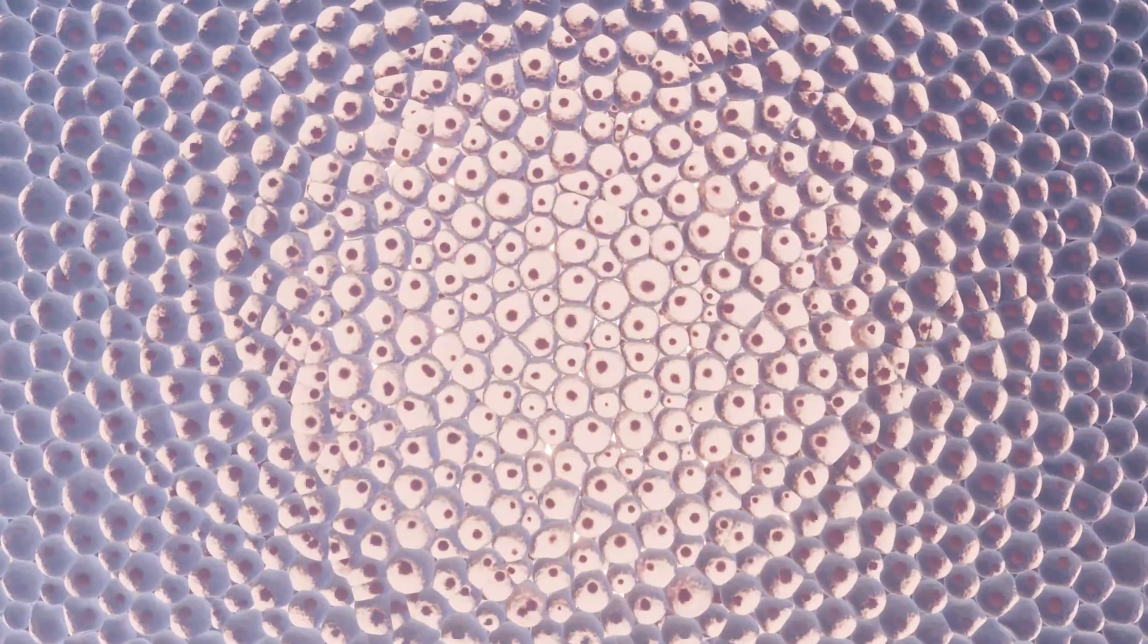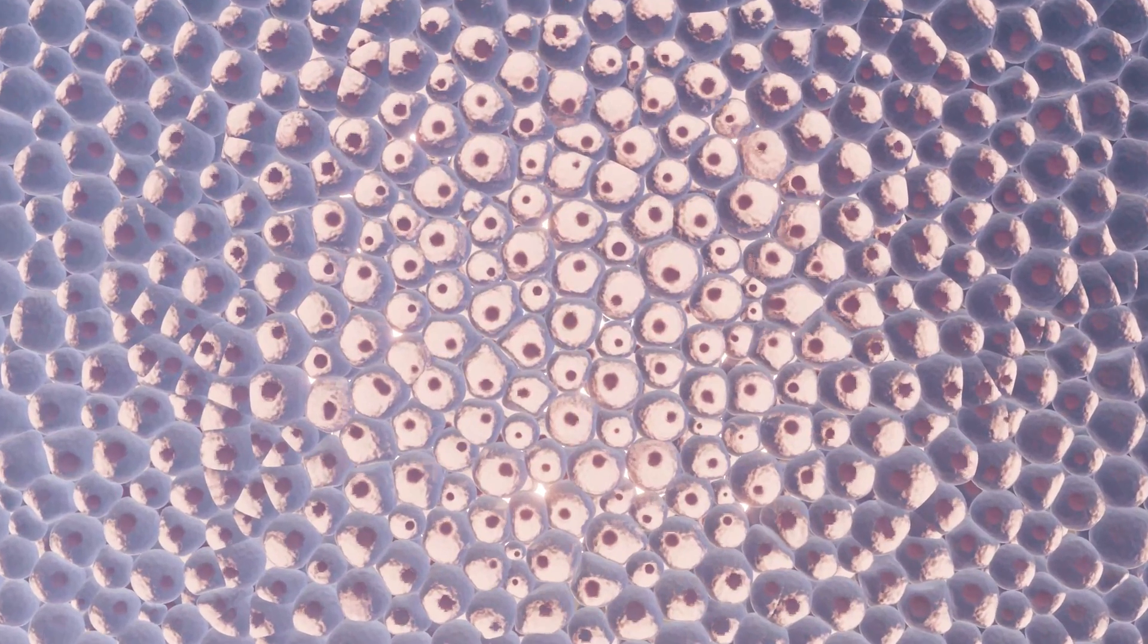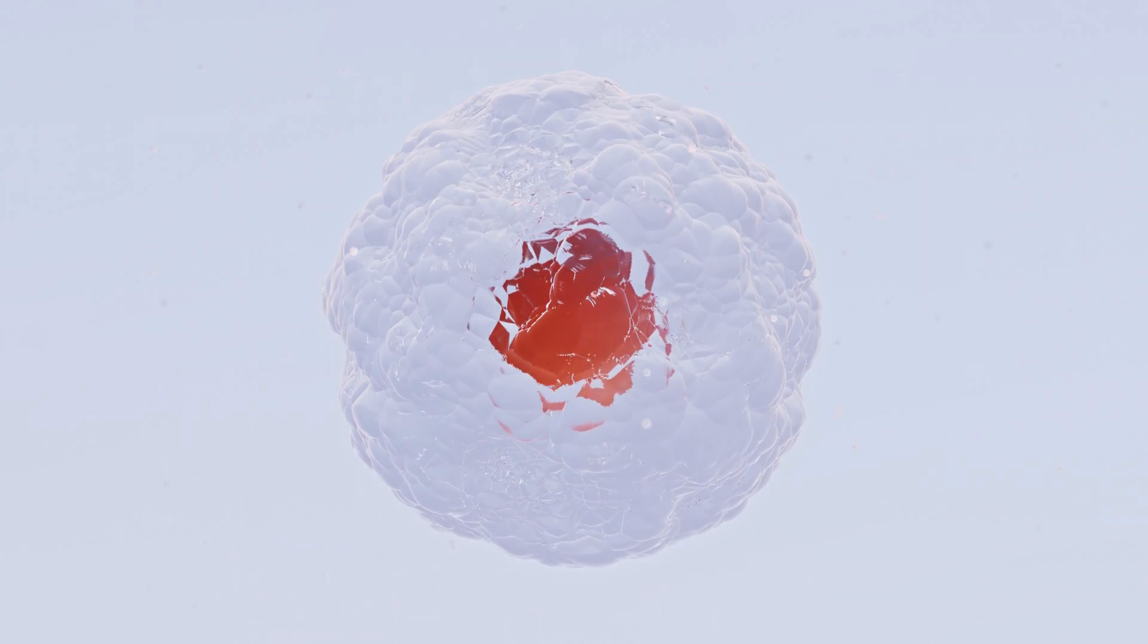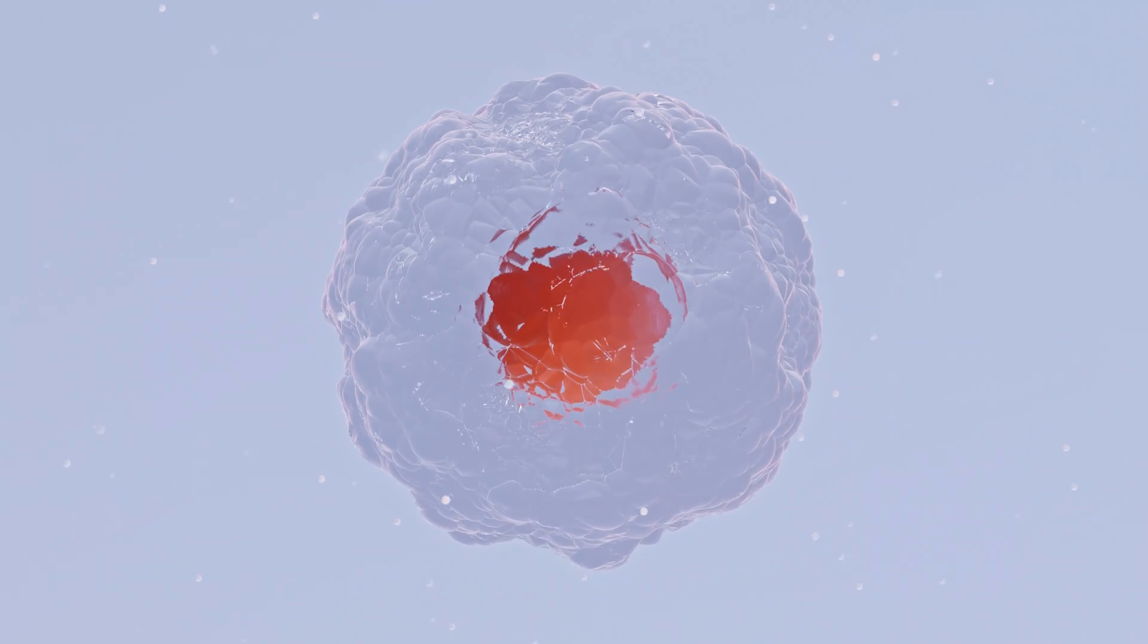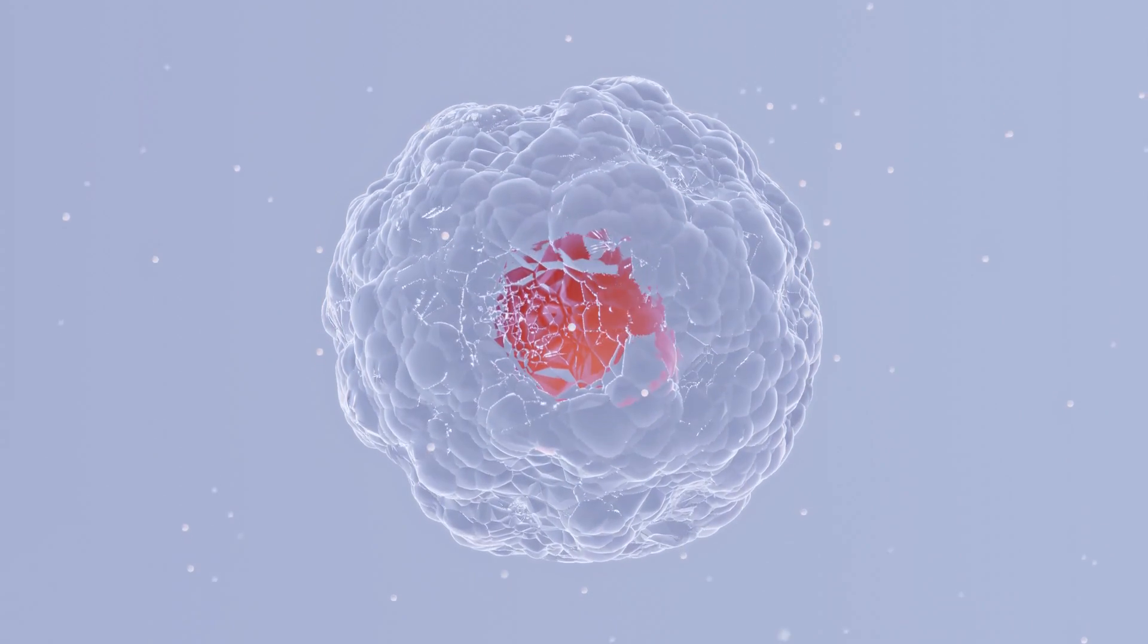As we move to the cellular level, the effects of the coherent water structure become even more impressive. Each cell is surrounded by a layer of water. As soon as this layer consists of more than 62% coherent water, it starts to form a protective coat around the cell.